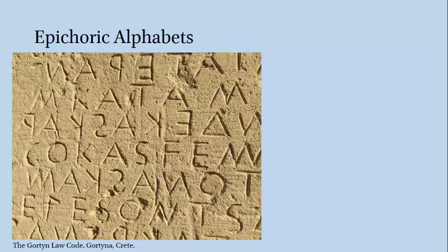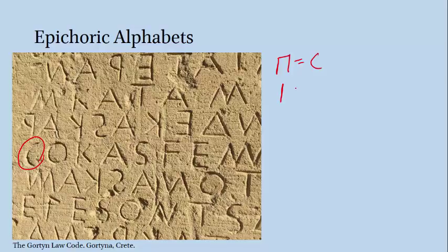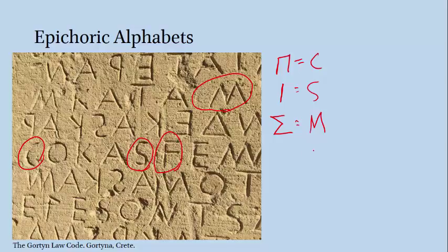A lot of other Greek letters were written differently in different places as well. If we go back to this picture of the Gorton Law Code, a law code inscribed on a wall in the town of Gorton in Crete, we can see that it's written in an epicoric script — that is, a regional variant of the Greek alphabet. We can see the letter Pi written here as though it's shaped like a letter C. We can see the letter Iota, which we'll write like an uppercase I, written here shaped like an S. We can see Sigma written sideways like a letter M. We also see the letter Digamma, which looks like an uppercase F, which dropped out of the Greek alphabet by the classical period.